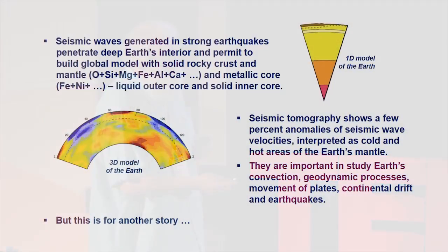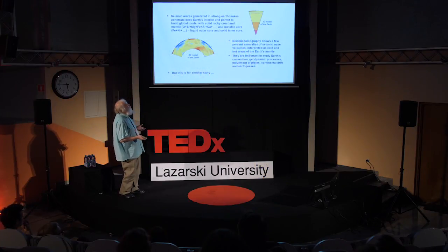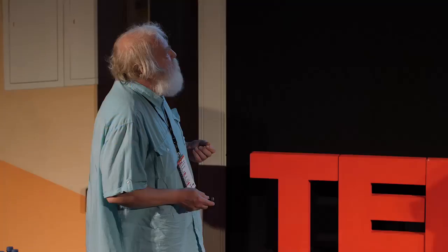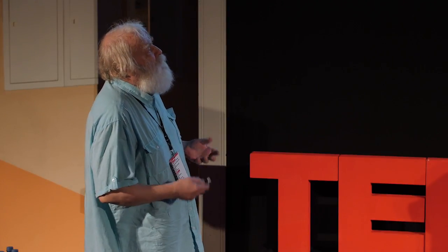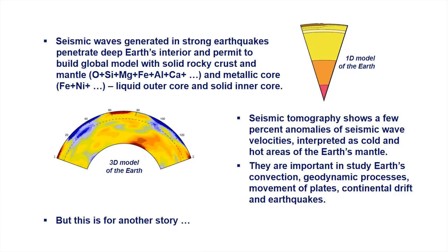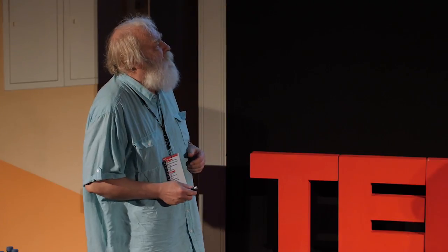To summarize: seismic waves generated in strong earthquakes penetrate the deep Earth's interior and permit us to build a global model with a solid rocky crust and mantle, and a metallic core. The outer core is liquid and the inner core is solid. Seismic tomography shows us a few percent anomalies of seismic wave velocities, which can be interpreted as cold and warm areas. This is particularly important in the study of Earth's convection and geodynamic processes, movement of plates, continental drift, and of course earthquakes. But that is for another story. Thank you very much.